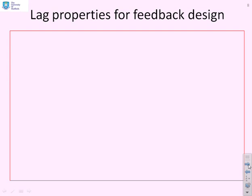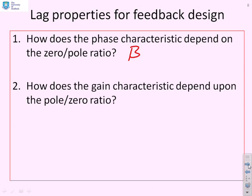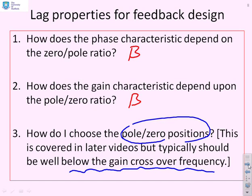So let's summarise the sorts of things we might be interested in. How does the phase characteristic depend on the zero pole ratio, which was beta? How does the gain characteristic depend upon this ratio, beta? And ultimately, we're going to ask ourselves, how do I choose the pole zero positions of this lag compensator? Now that's for a later set of videos, but we'll just know it here for completeness. Normally, you choose it to be well below the gain crossover frequency. So when you know what the gain crossover frequency is, you can interpret this statement.